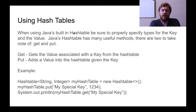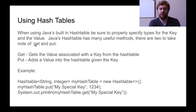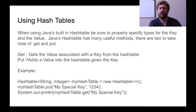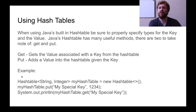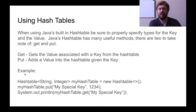When using Java's built-in hash table, be sure to properly specify the types for the key and the value. Java's hash table has many useful methods, but we're going to look at two of them — get and put. Get gets the value associated with the key from the hash table; it had an input parameter of the key and output of a value. Put adds a value into the hash table given the key, finding the index using a hash function and putting the value into the hash table.